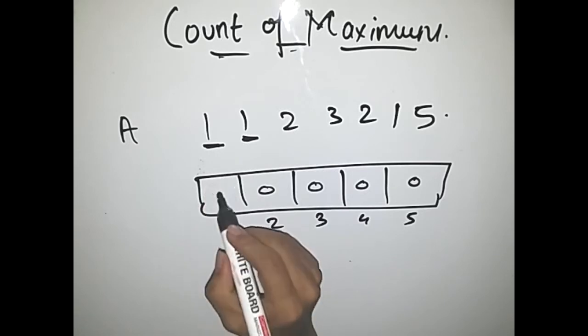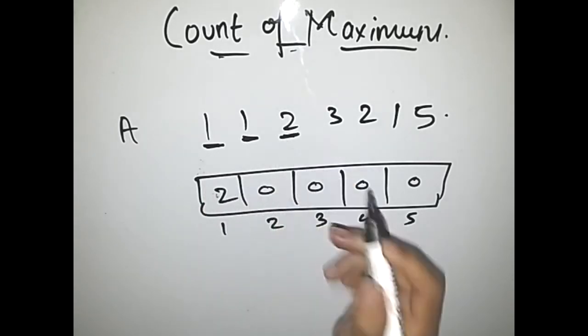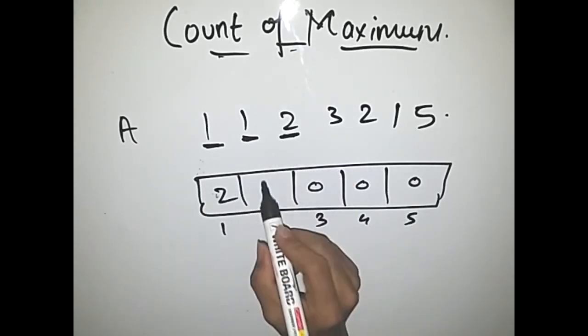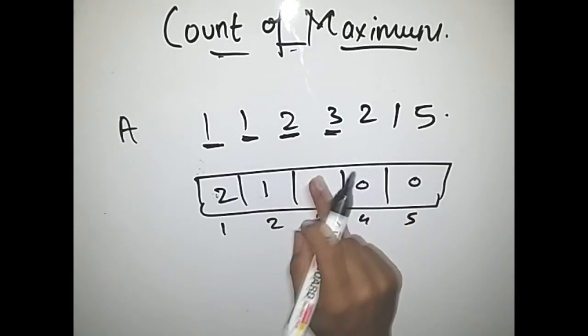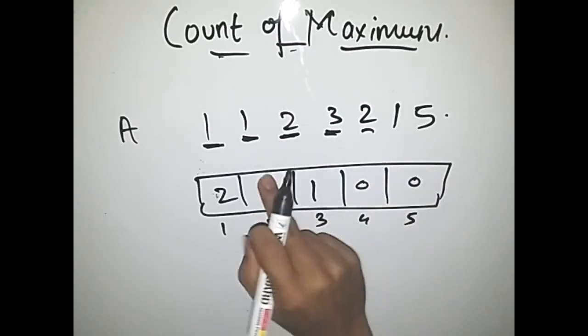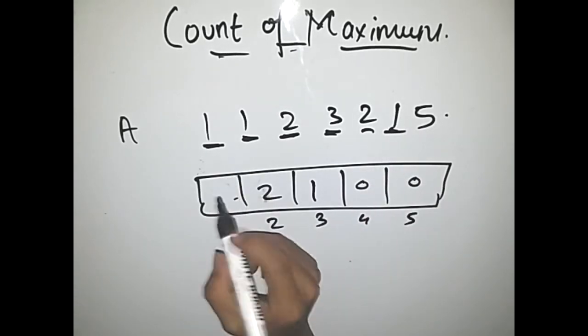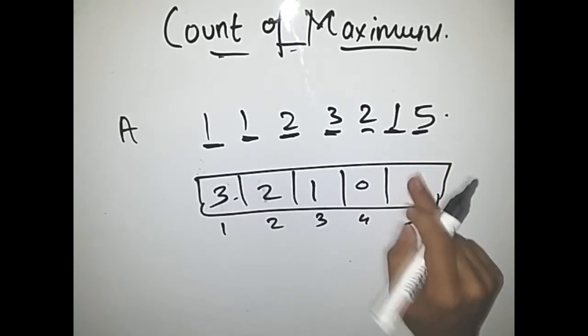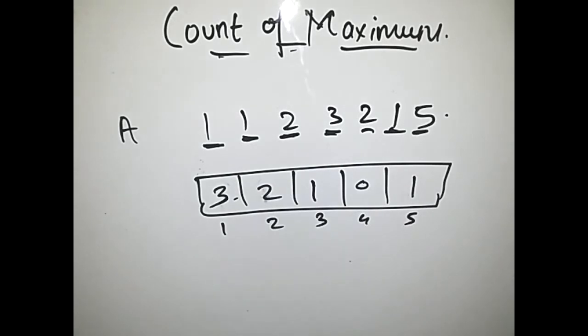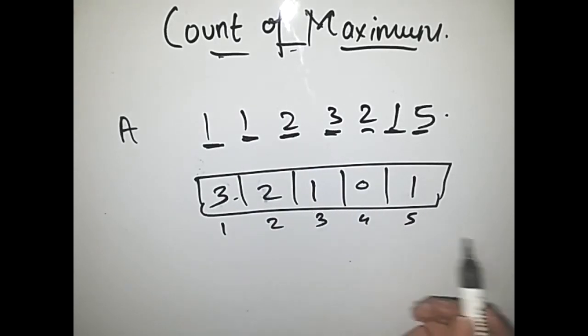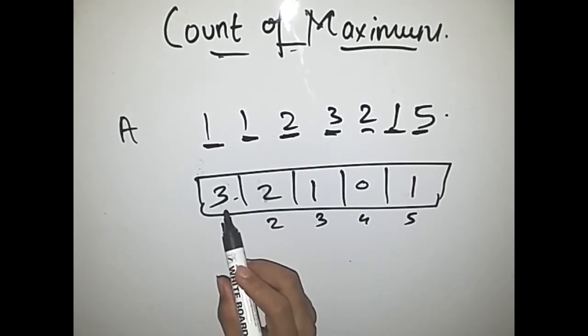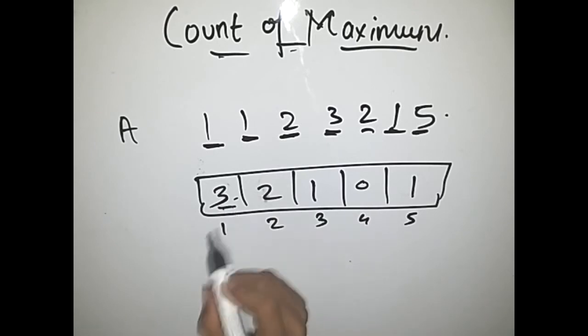First input is 1, so our 1 gets incremented. Next input is 1, so 1 becomes 2. This is 2, that's why this becomes 1. This is 3, becomes 1. Again this is 2, so 2 becomes 2. This is 1 again, so 2 becomes 3. This is 5, so this becomes 1. At the end we traverse the array and find the maximum number which is 3, and print its index and that element itself, like 1 3.